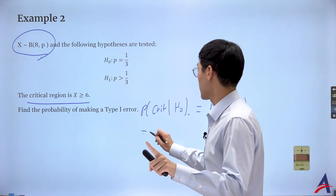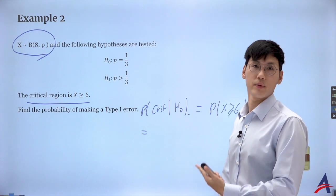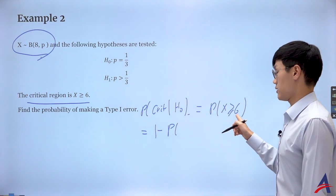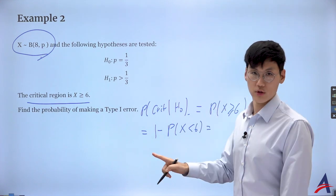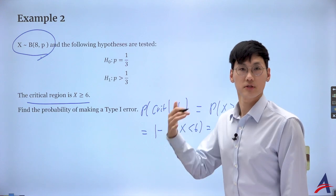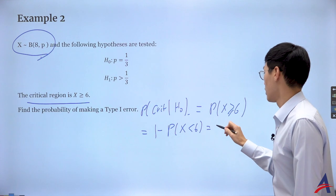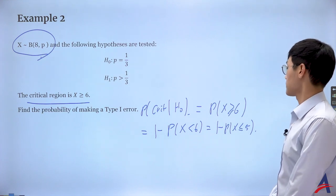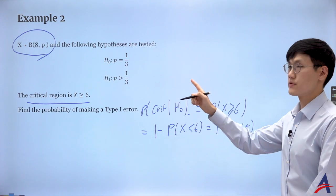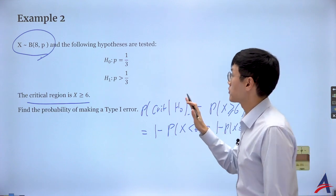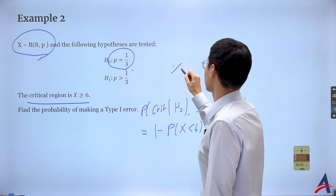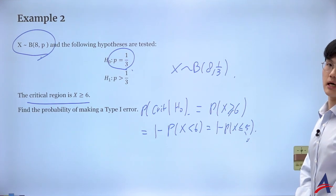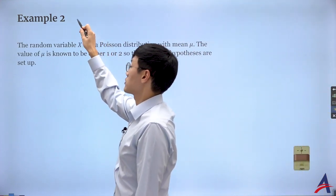This is a discrete random variable, which is different from the normal continuous distribution. For calculator use, the CDF is programmed as 'less than or equal to,' so I convert: P(X ≥ 6) = 1 - P(X ≤ 5). Be careful — for a discrete random variable you cannot just say P(X ≤ 6); you need P(X ≤ 5). I use the distribution with the null proportion of 1/3 to perform the CDF and get the type 1 error.